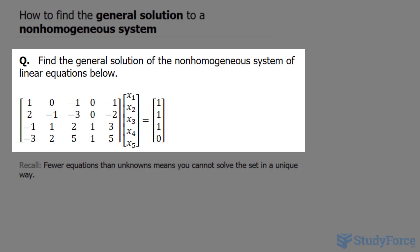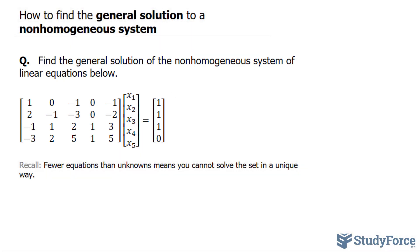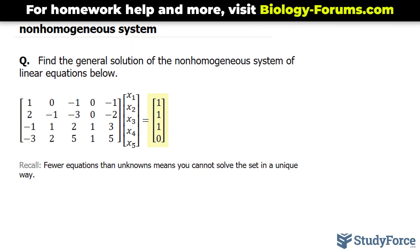The reason why this is a non-homogeneous system is because we have the equations equaling something other than just zeros. So we have here the solutions in this column vector.